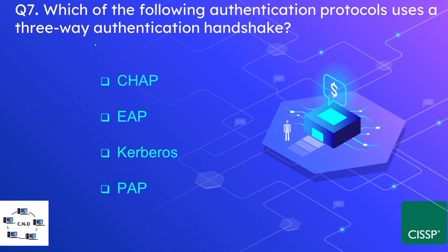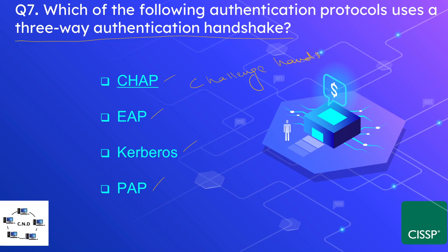Question number seven: which authentication protocol uses a three-way authentication handshake? The options are CHAP, EAP, Kerberos, and PAP. The correct answer is CHAP, which stands for Challenge Handshake Authentication Protocol. As the name suggests, it uses a three-way handshake.